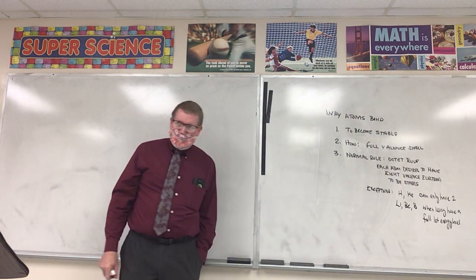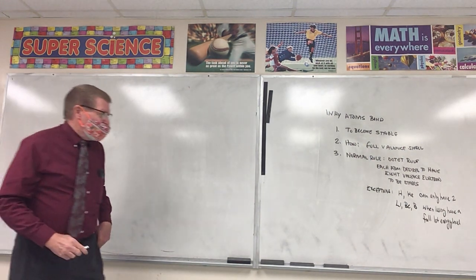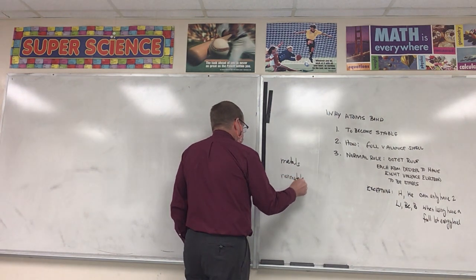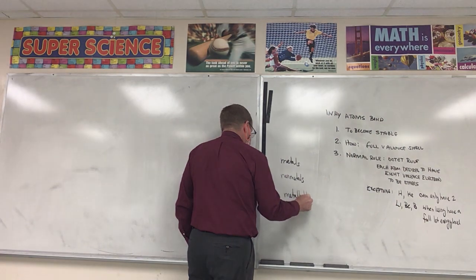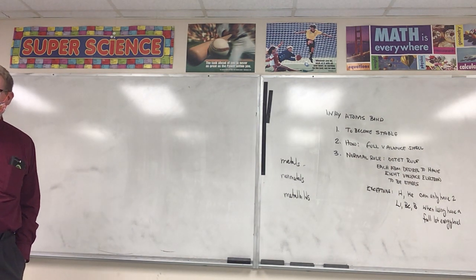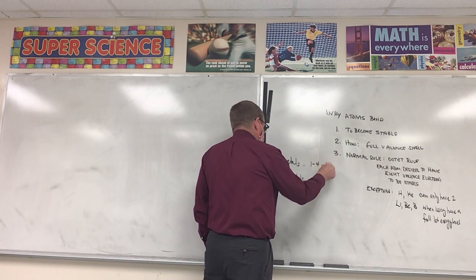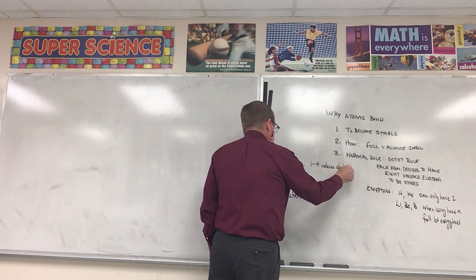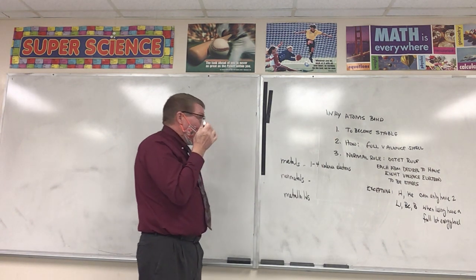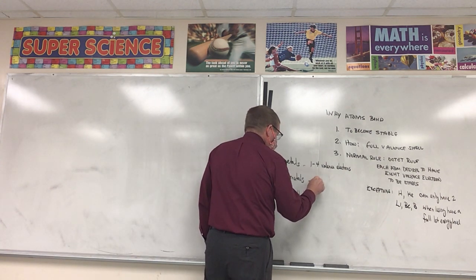On our periodic table we have three classifications of elements — metals, non-metals, and metalloids. Most of our metals would have how many valence electrons? One to four. Most of our non-metals would have five to eight valence electrons.